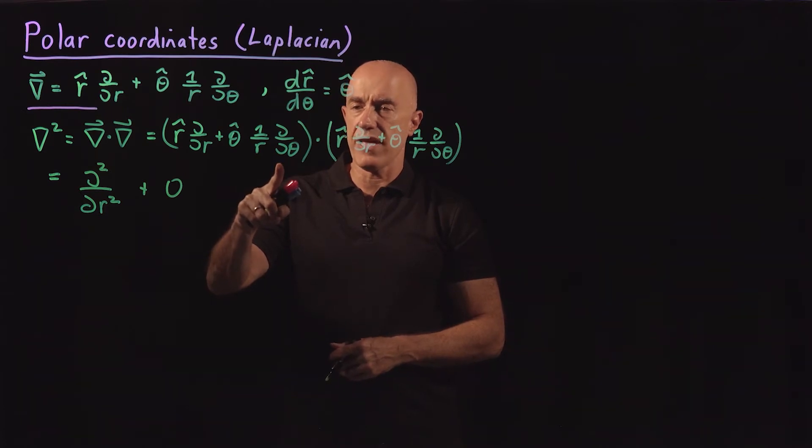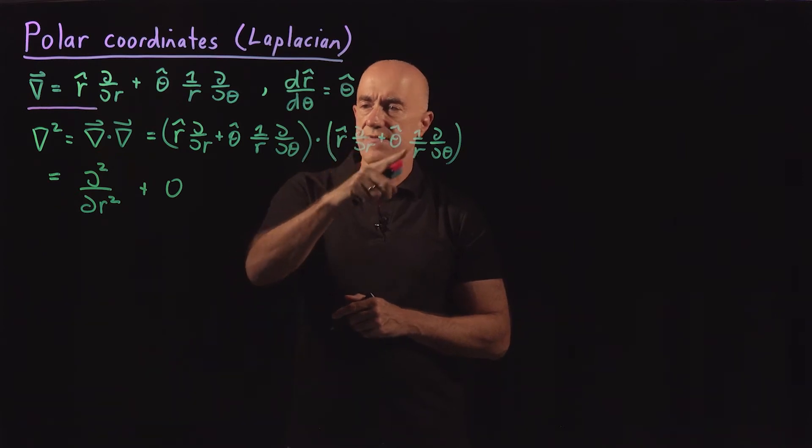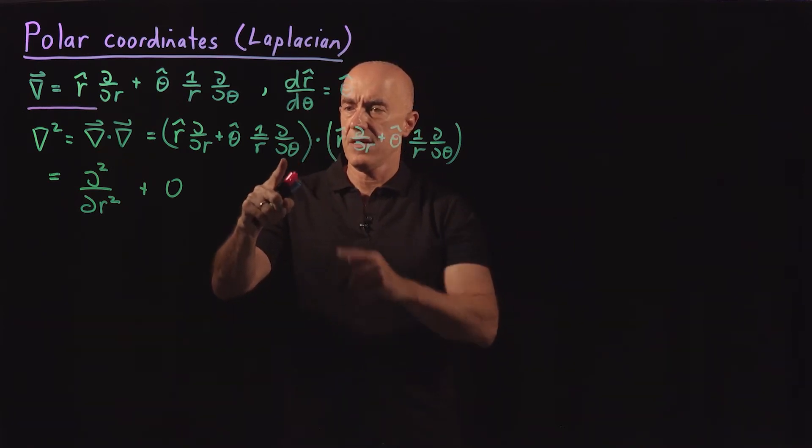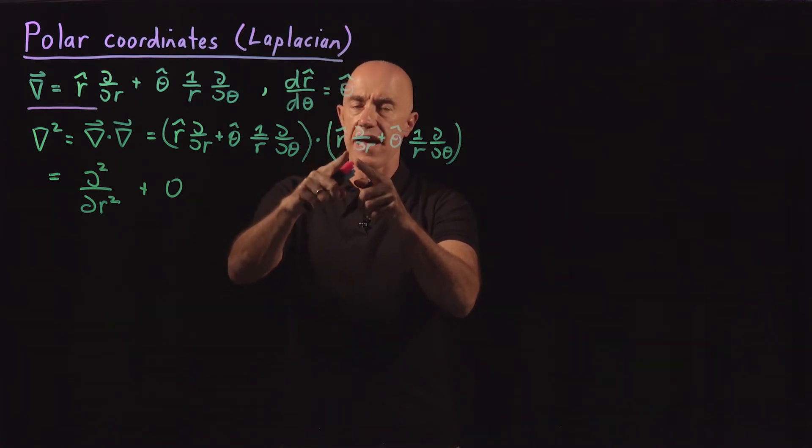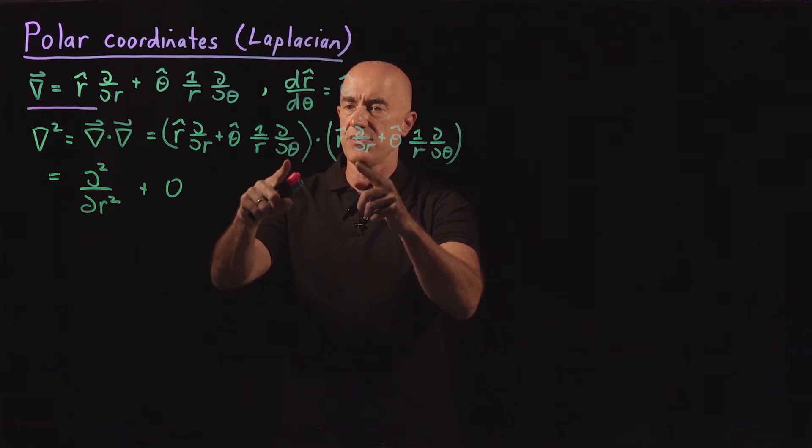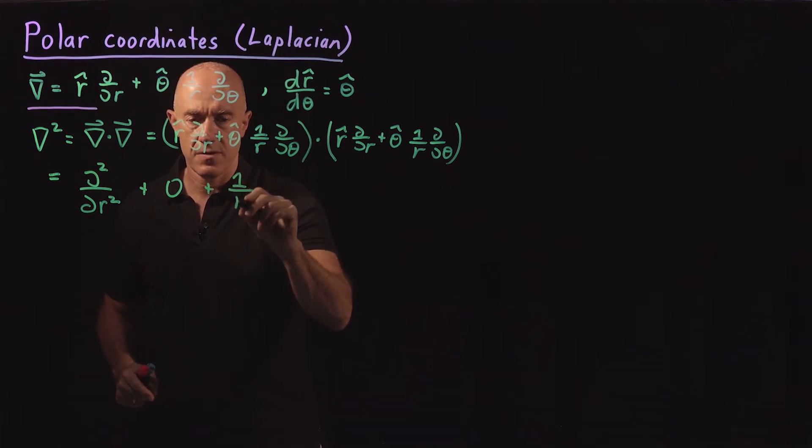Then we go to the d/dθ term, the theta hat term. Now we have to worry that the unit vectors depend on theta. The first term here, we have theta hat dot r hat would be 0. But now r hat depends on theta. In fact, dr hat/dθ is equal to theta hat. So when this derivative acts on r hat, we get theta hat. And what we have left over then is 1 over r d/dr.